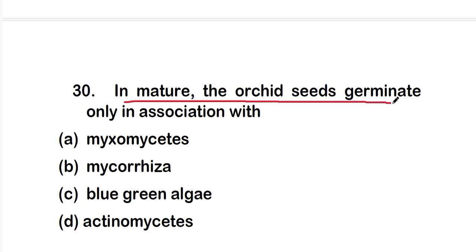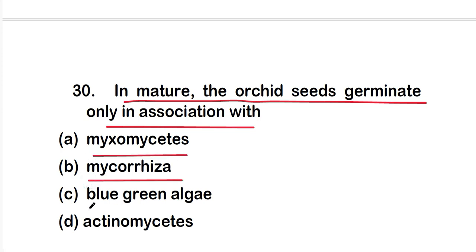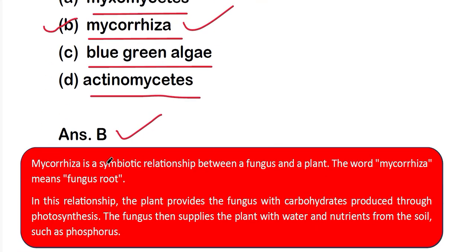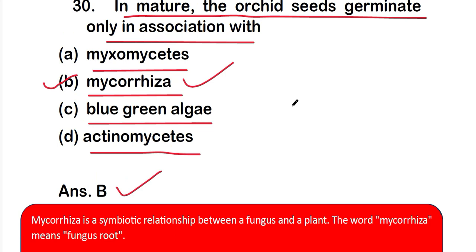Question 30: orchid seeds germinate only in association with option A: myxomycetes; option B: mycorrhizae; option C: blue-green algae; or option D: actinomycetes. The right answer is option B — mycorrhizae. Mycorrhizae is a symbiotic relationship between a fungus and a plant. The plant provides the fungus with carbohydrates from photosynthesis, and the fungus supplies the plant with water and nutrients such as phosphorus from the soil.